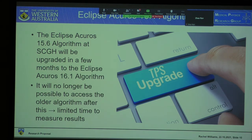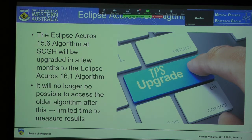The Eclipse Acuros 15.6 algorithm used at Charlie's is going to be upgraded in a few months to the Eclipse Acuros 16.1 algorithm. After this time it will no longer be possible to access the current algorithm, which means there will be limited time to measure results.